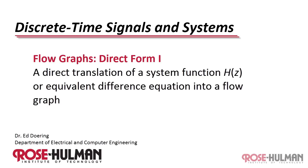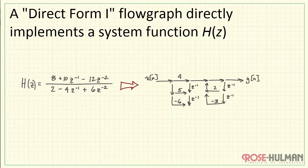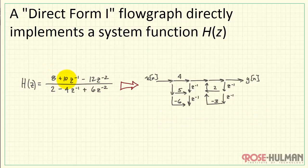Let's take a look at the Direct Form 1 flow graph implementation of a system function. Here's a specific example: I have a system function h of z, second order in this case, and this is the flow graph implementation of that system function. These numerical coefficients somehow get involved in the specific numbers showing up on our flow graph. Let's see if we can better understand how to get those numbers.